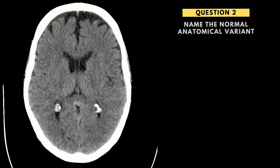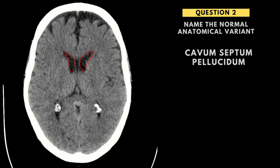Moving on to question two, we have an axial CT of the head and we're asked to name the normal anatomical variant that can be seen. Casting our eyes to the lateral ventricles — left lateral ventricle here and right lateral ventricle — normally these are separated by a single thin membrane called the septum pellucidum. What we have here is actually two membranes, two pellucida, separated by what looks like a CSF-filled space. This is known as cavum septum pellucidum, a normal anatomical variant with very little clinical significance. If this were to extend posteriorly towards the splenium of the corpus callosum, that would be known as a cavum vergae, which is just an extension of the cavum septum pellucidum — again, of very little clinical significance.